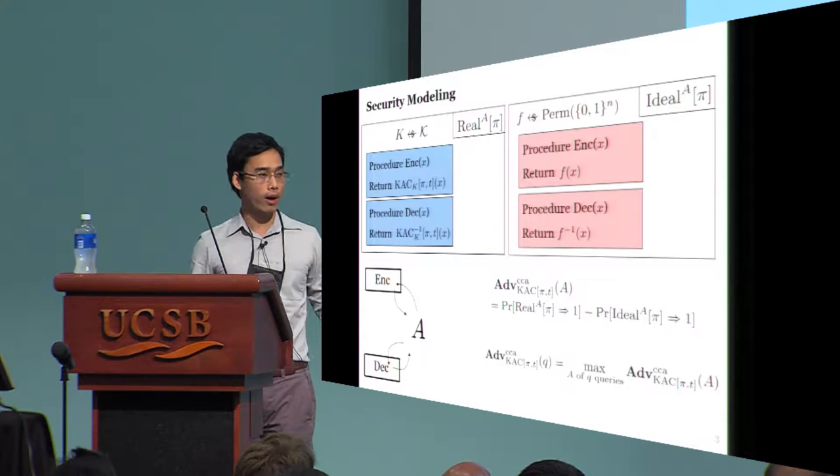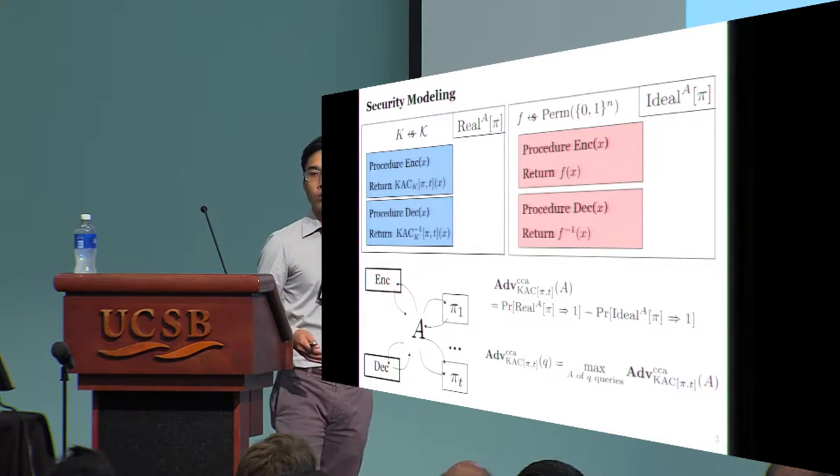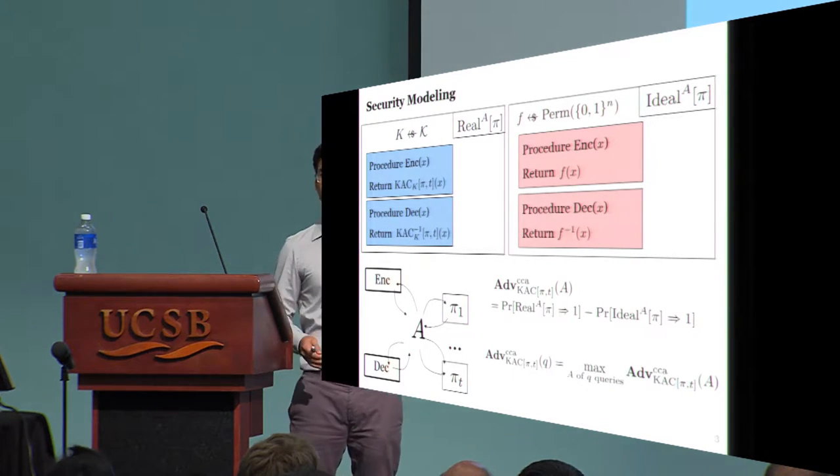In both worlds, the adversary will get access to the primitives, pi 1 to pi t.